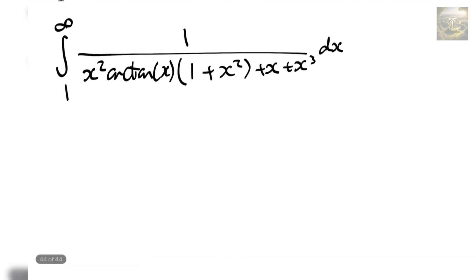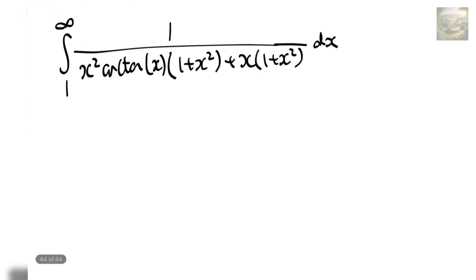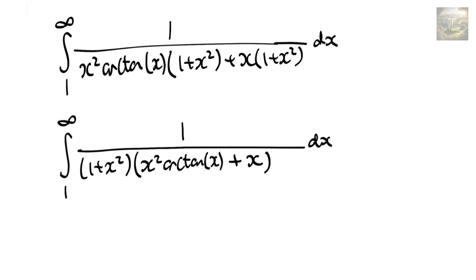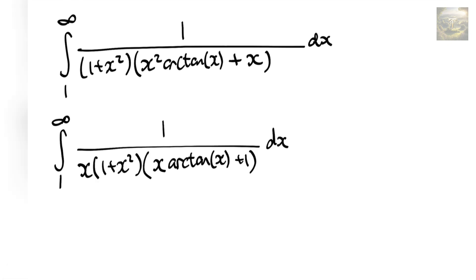We can notice that we can do a similar thing and factor out an x from the x and the x³. Factoring out the x we get x(1 + x²). As we can see, we've got a common (1 + x²) in the denominator, so let's factor that out. We can then factor out an x from the x²·arctan(x) and the x here.